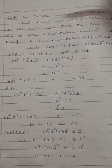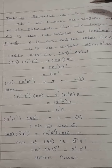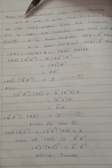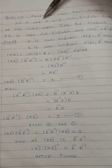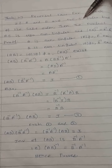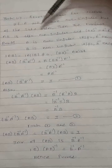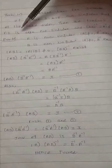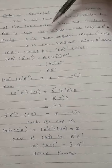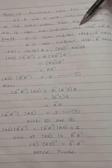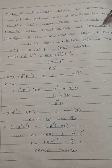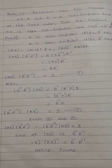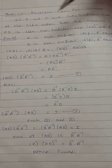Theorem 1.7: Reversal Law for Inverses. Statement: If A and B are non-singular matrices of the same order, then the product AB is also non-singular, and the inverse of AB equals B inverse into A inverse. Proof follows.